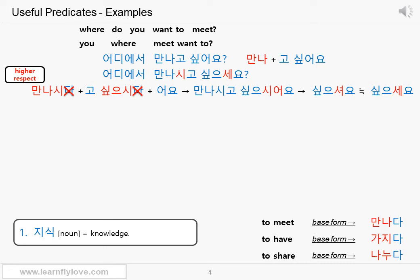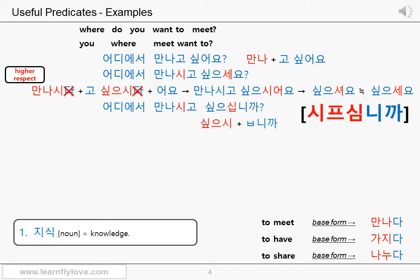Now in formal honorifics: 어디에서 part is the same, 만나시고 part is the same. The higher-respect form of 싶다 is 싶으시다, and the stem is 싶으시. You add the final ㅂ consonant and 니까 at the end because it's a question: 싶으십니까. 어디에서 만나시고 싶으십니까?